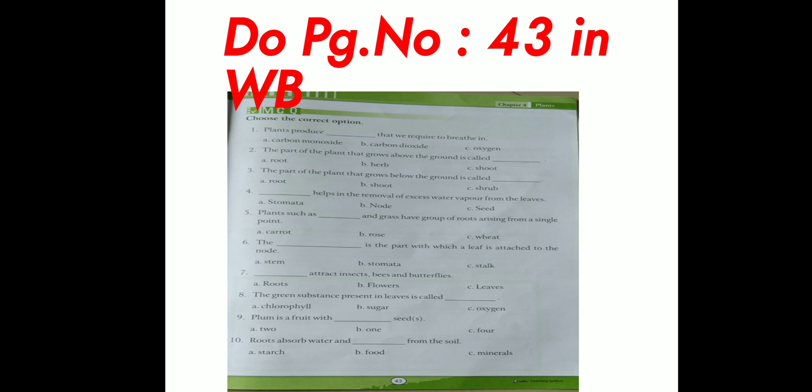Seventh question. Dash attract insects, bees and butterflies. Option A, roots. Option B, flowers. Option C, leaves.